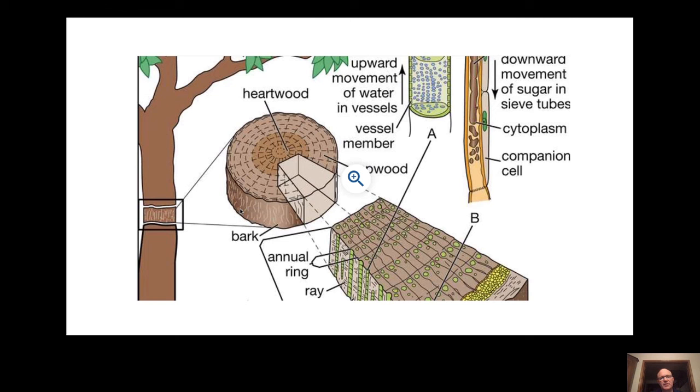If you're in a deciduous or temperate forest, those are the two differences between them. The phloem is just on the other side of the bark—this little diagram doesn't show it—but the phloem would be here on the inner part of the bark.